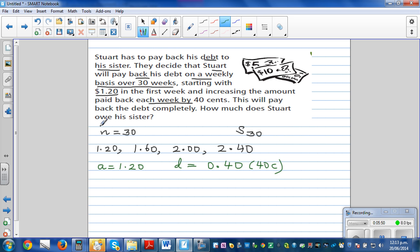Okay, and n we know is 30. So s30 using the formula is 30 divided by 2, bracket, 2 times a which is 1.20 plus 30 minus 1 times d which is 0.4. Okay, so this is 15.